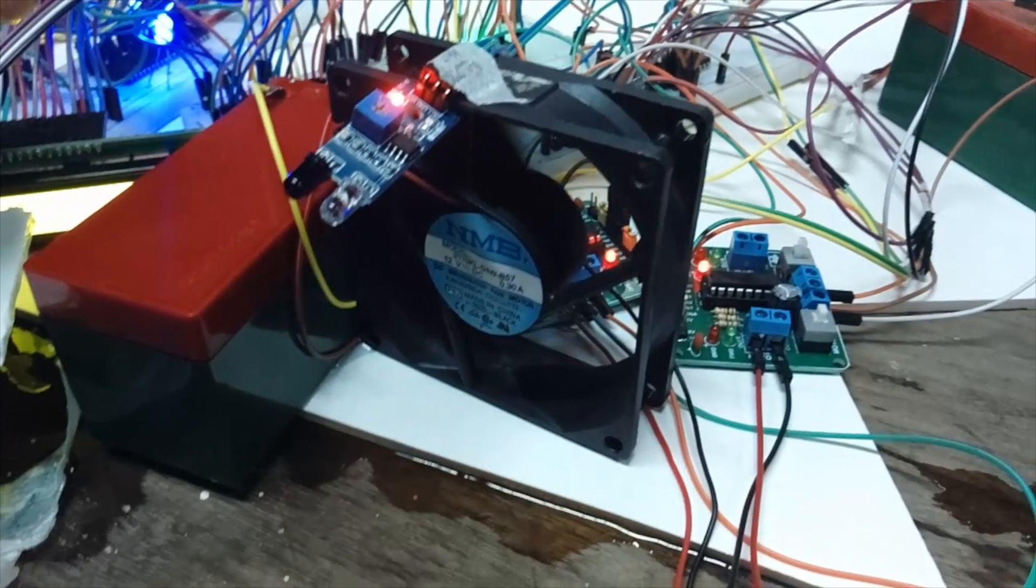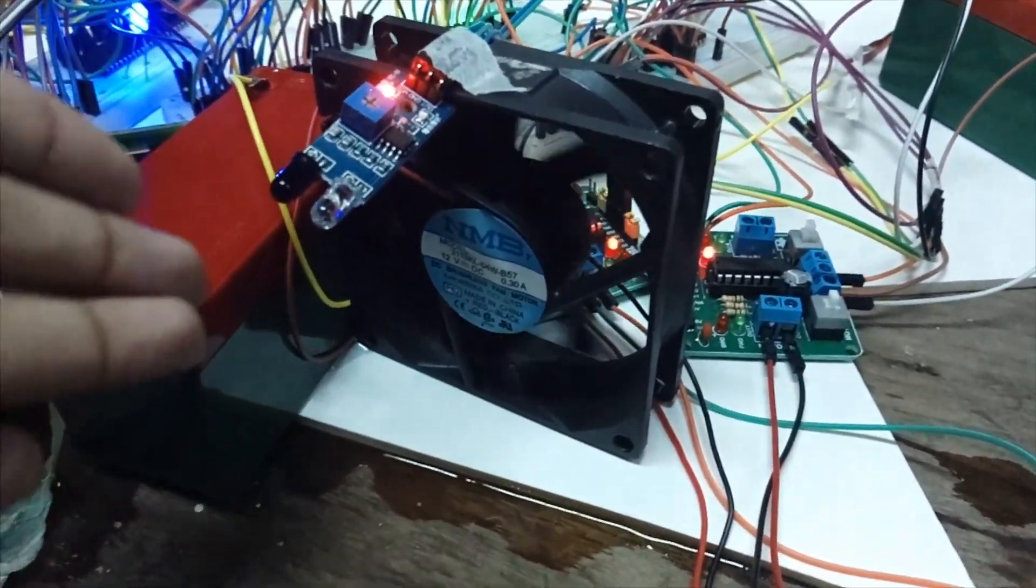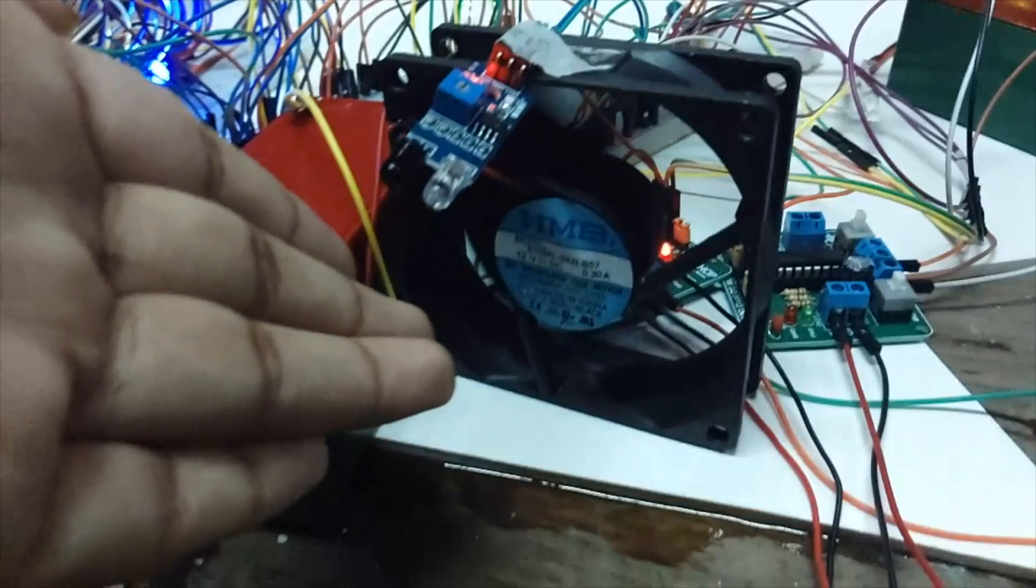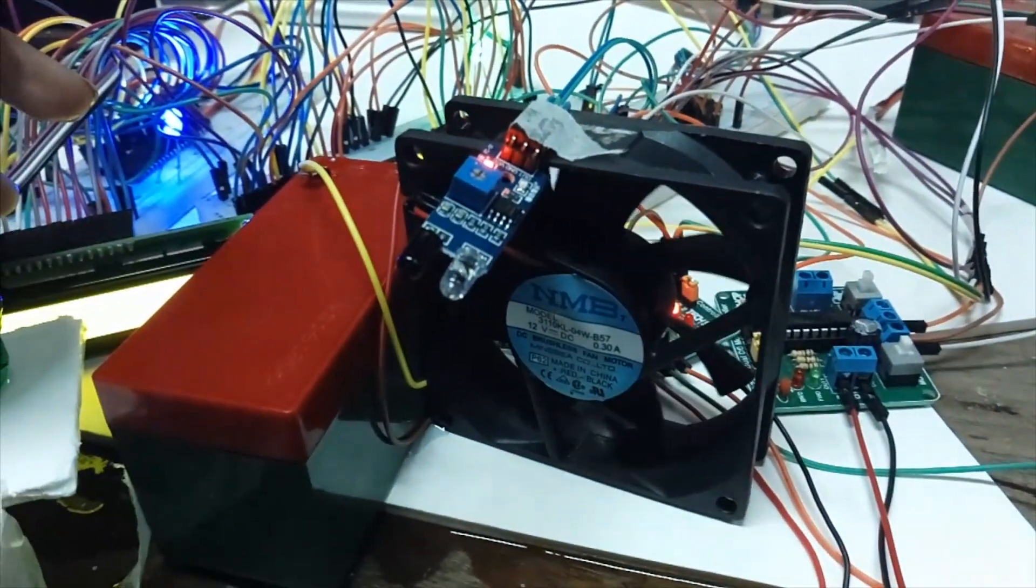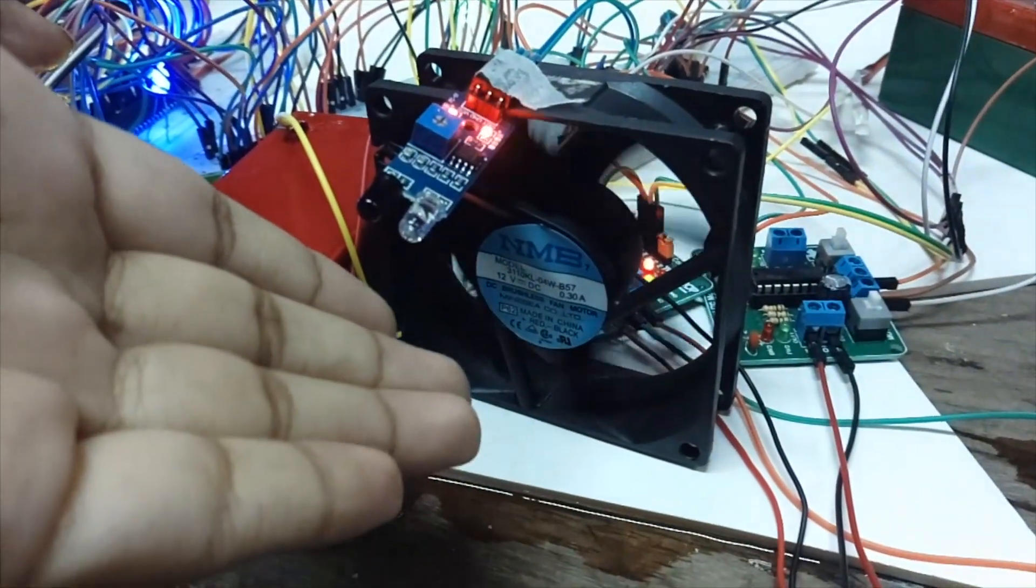We have a fan for hand drying. When we place our hand in front of the IR sensor, we can see the fan rotating. It rotates pretty well. And when we remove our hand, it stops.